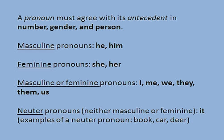Keep in mind that a pronoun must agree with its antecedent in number, gender, and person. For example, there are masculine pronouns like he and him, feminine pronouns like she and her, pronouns that can be masculine or feminine depending on the sentence like I, me, we, they, them, and us, and neuter pronouns, which are pronouns that are neither masculine nor feminine. The only neuter pronoun we use is the word it.